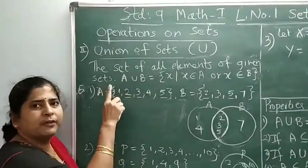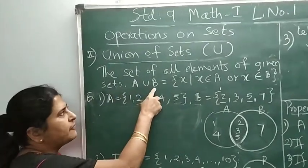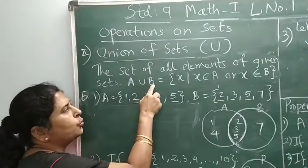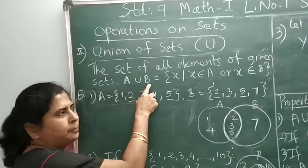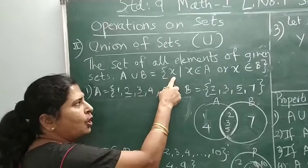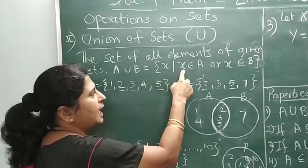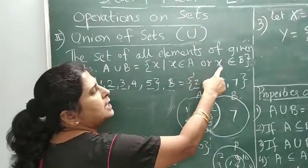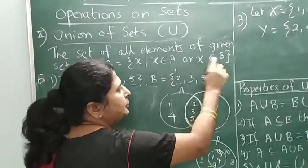So how is it written? For given sets A and B, how can it be defined? A union B, written as A U B, means the set of all X such that X is element of set A or X is element of set B.